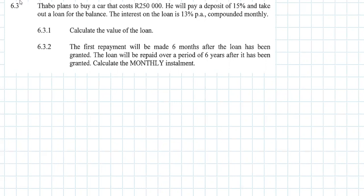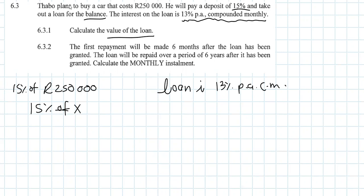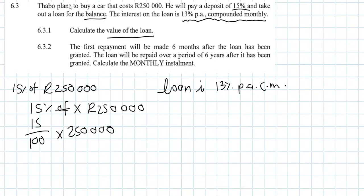Number 6.3: Tabo plans to buy a car that costs 250,000 rand. He'll pay a deposit of 15% and take out a loan for the balance. The interest on the loan is 13% per annum compounded monthly. We need to calculate the value of the loan — that's the amount after the 15% deposit is paid. So we calculate 15% of 250,000.